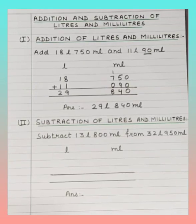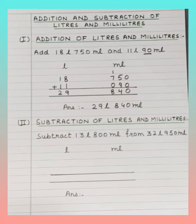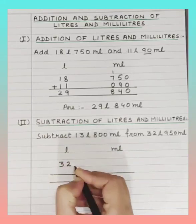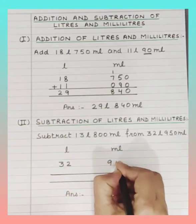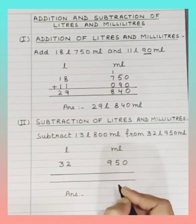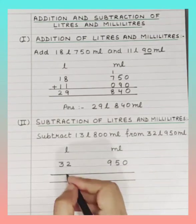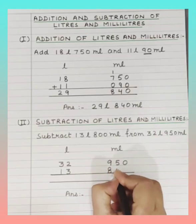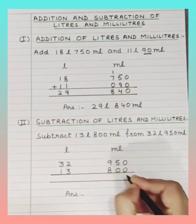Subtract 13 liters 800 milliliters from 32 liters 950 milliliters. First we arrange the numbers in columns. We write 32 in the liters column and 950 in the milliliters column. Then we write 13 in the liters column and 800 milliliters in the milliliters column.